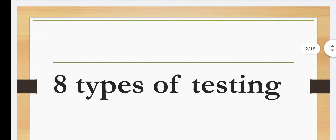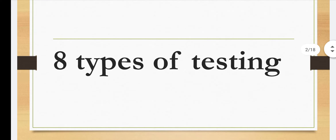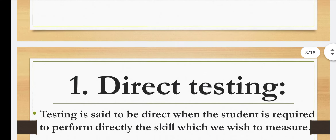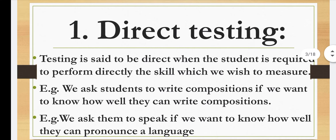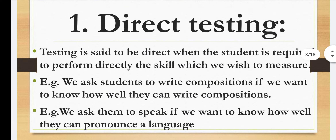First of all, we will see which 8 types of testing are available — what can you do with the teacher, and what can you do with the test results. First of all: direct testing. Direct testing is when the teacher directly applies whatever their motive or wish is.